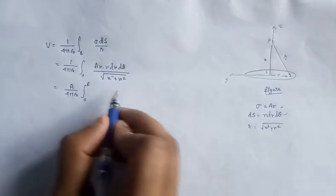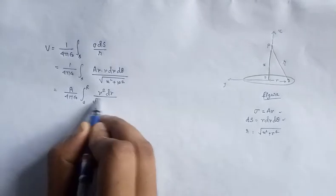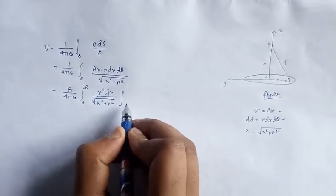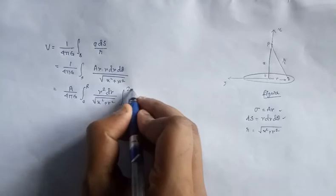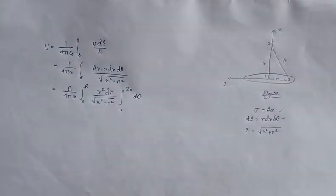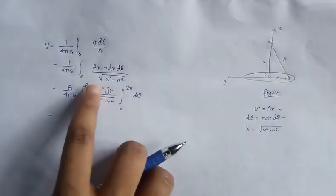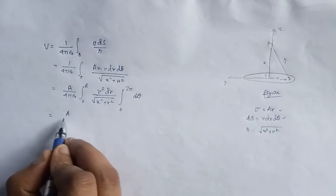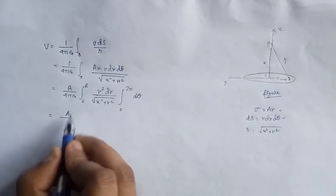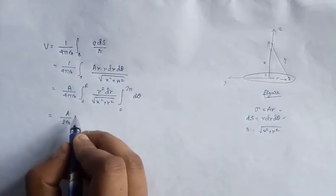This is a double integral. We take A outside, giving one over four pi epsilon-naught times A. Integrating from 0 to R: r-squared dr over root of (x-squared plus r-squared), times the angular integral from 0 to 2π of dθ. The angular integration gives 2π, which cancels with 4π to give A over 2 epsilon-naught, times the remaining integral.